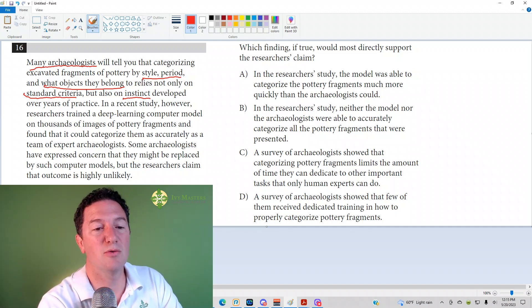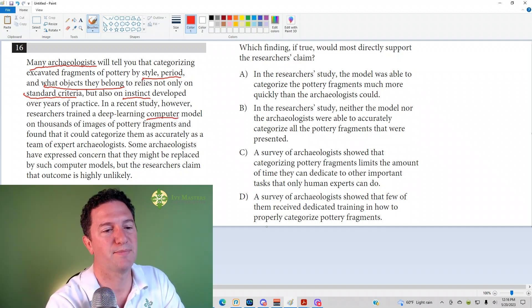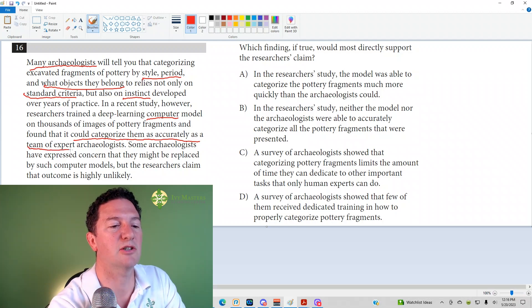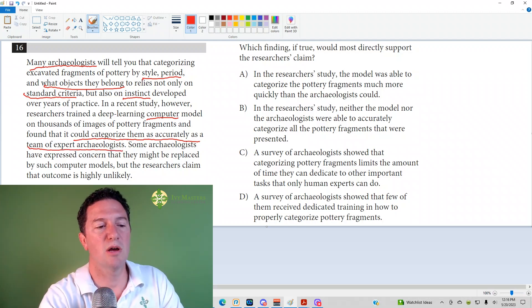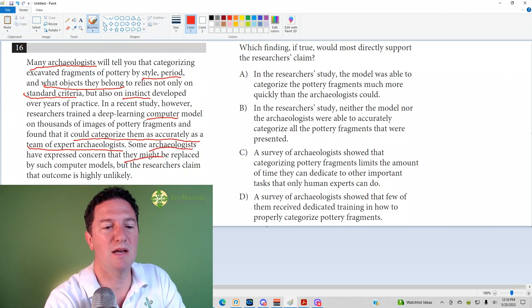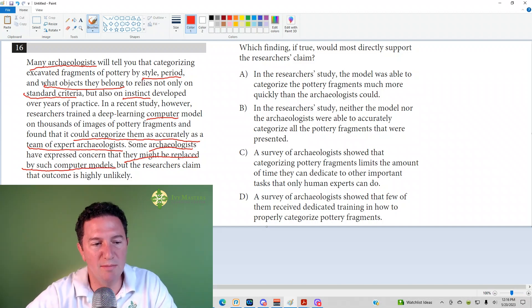Next sentence, in a recent study, however, researchers trained a deep learning computer model on thousands of images of pottery fragments, and found that it, the computer, could categorize them, the pottery fragments, as accurately as a team of expert archaeologists. Some archaeologists have expressed concern that they might be replaced by such computer models, but researchers claim that outcome is highly unlikely.